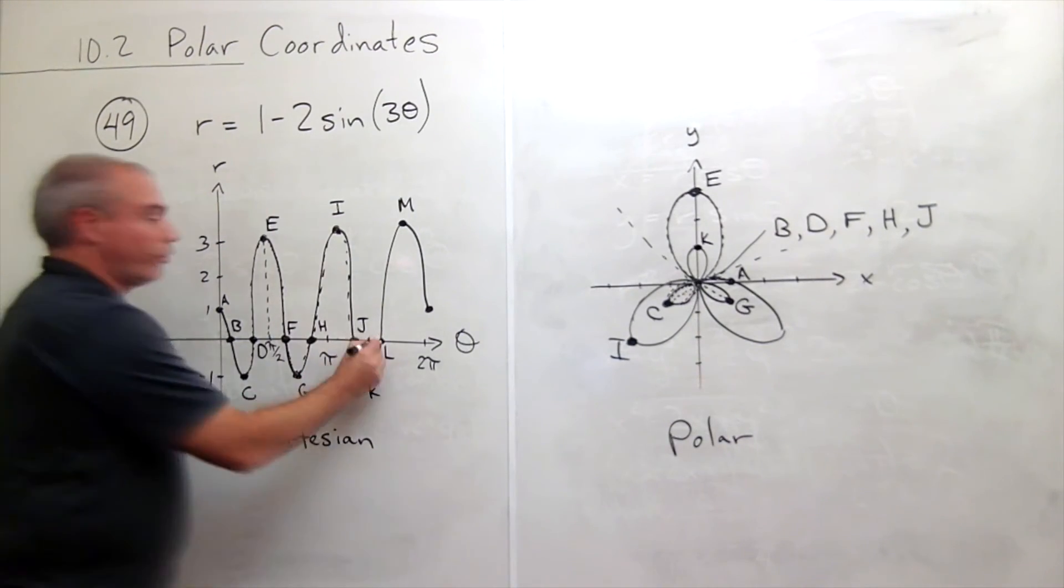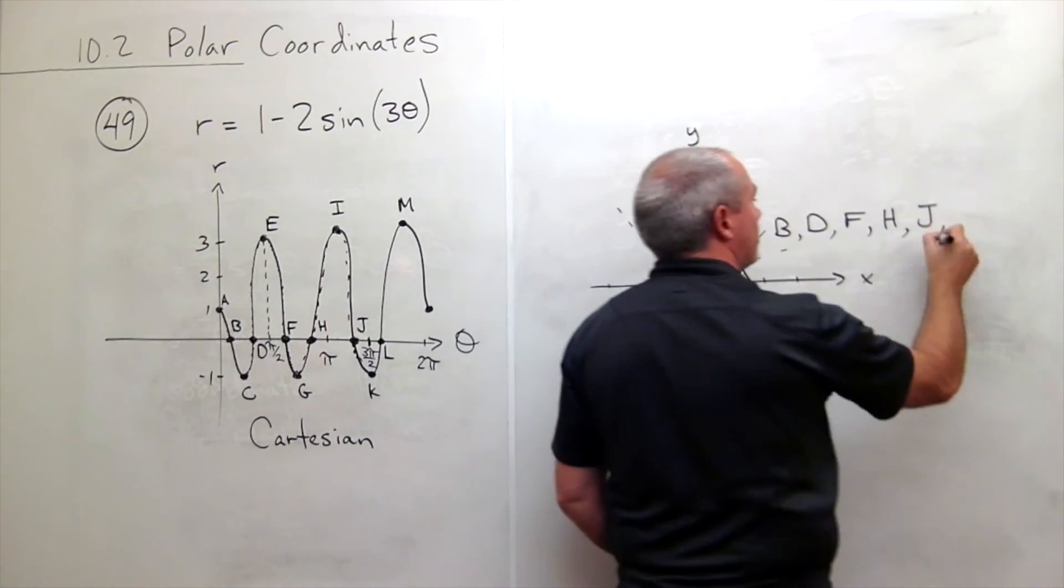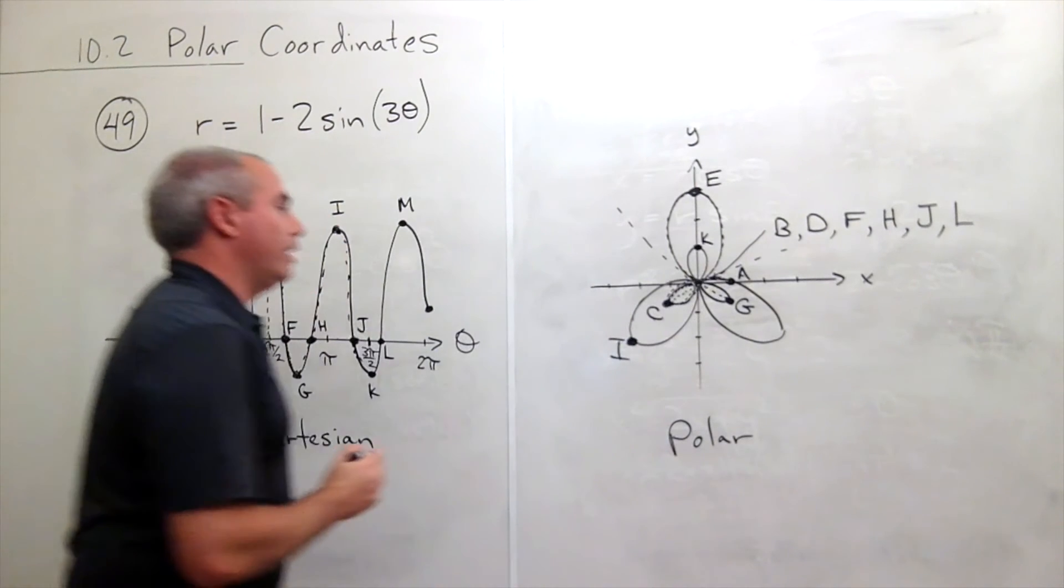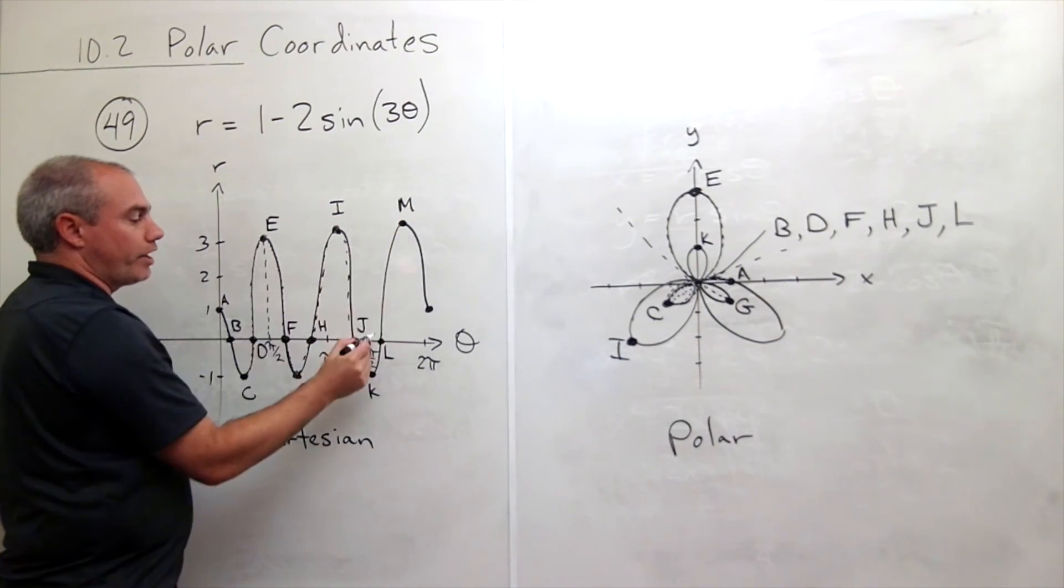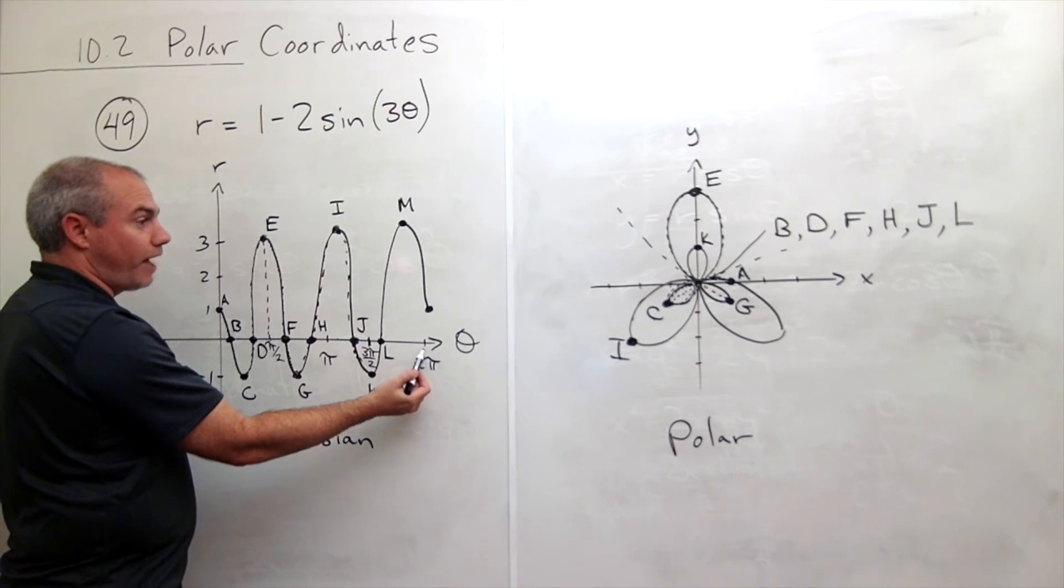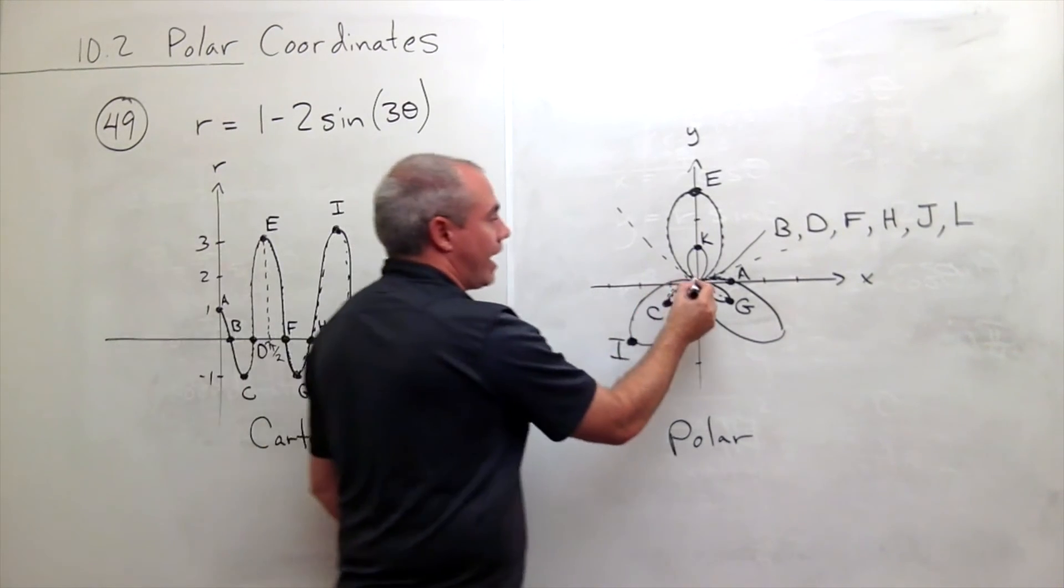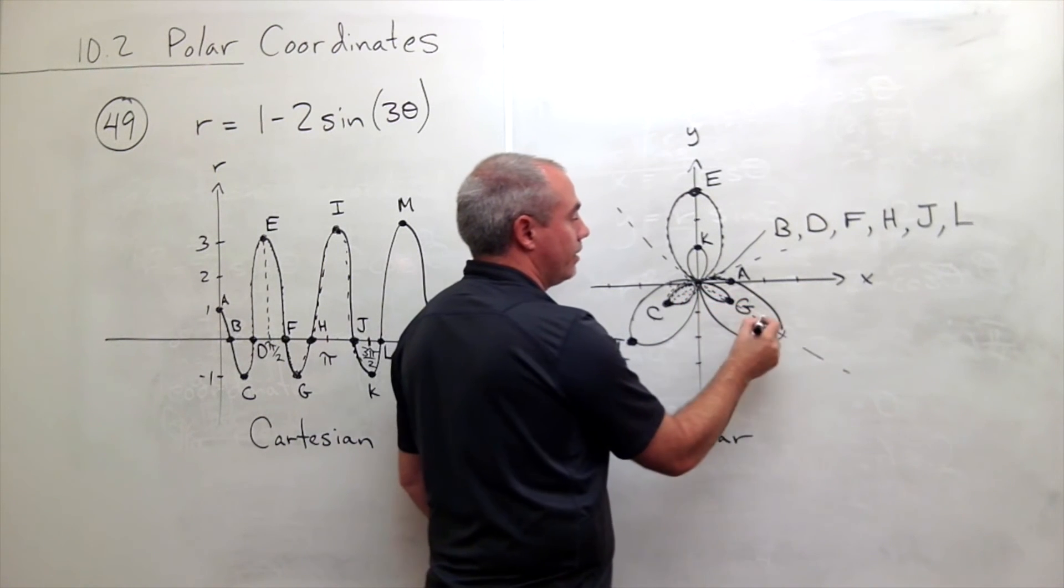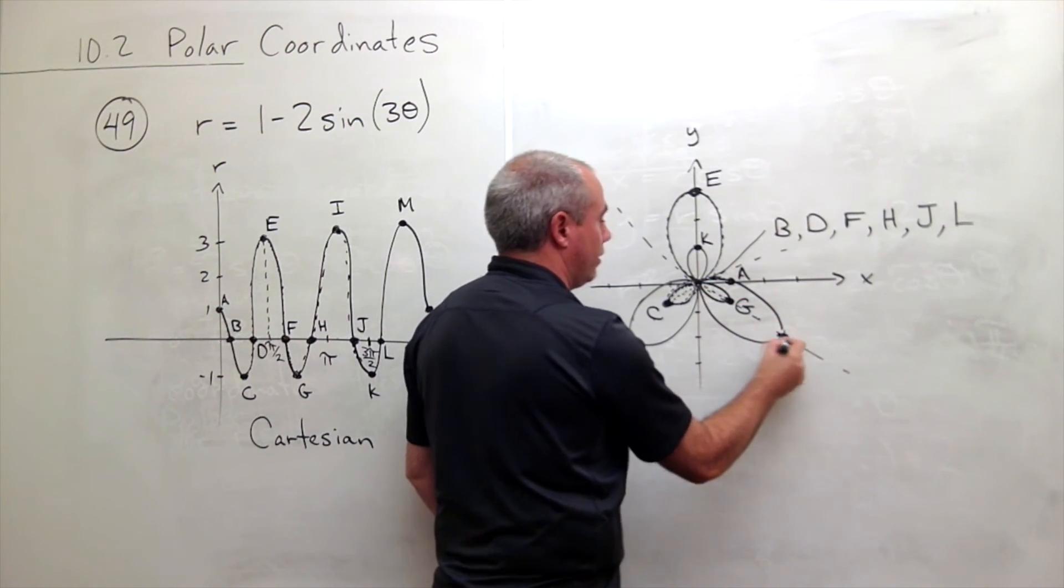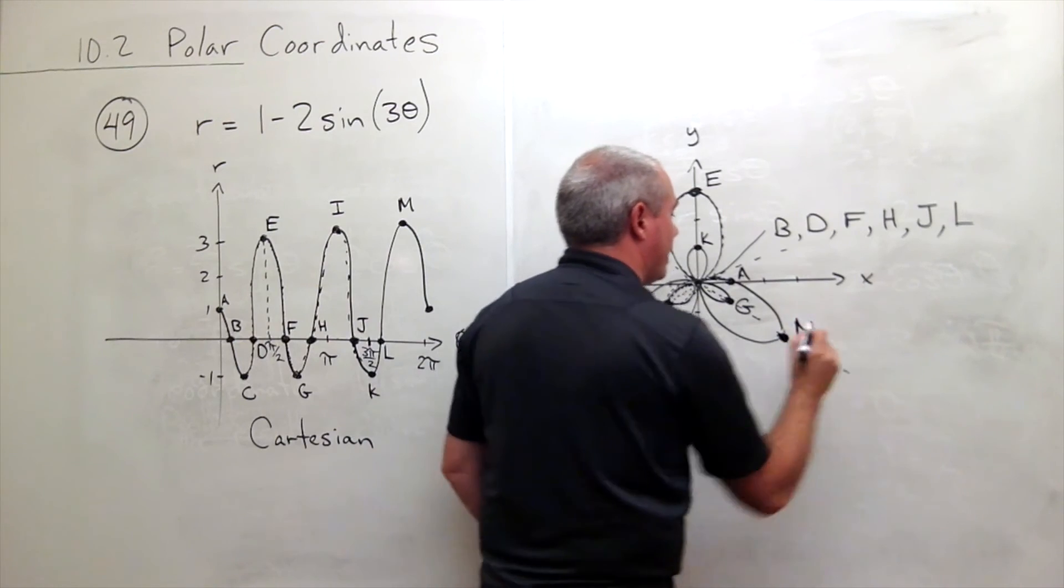Then l is back at the origin again, so this is also l. And then finally, moving even further, I go out 3. So we're almost at 2 pi. So at an angle of almost 2 pi, I walk out 1, 2, 3, and that's my point m.